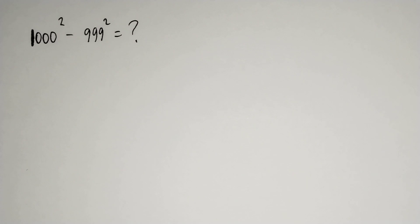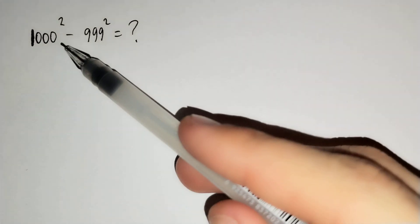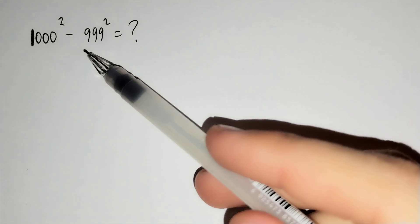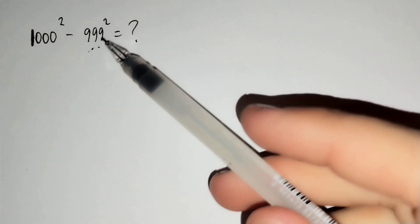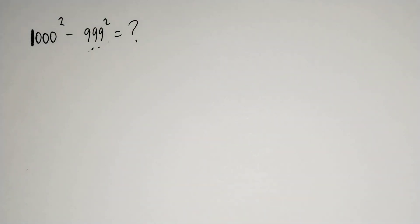Hi everyone. In this video, we will solve this problem: 1000 squared minus 999 squared. How should we solve this problem?